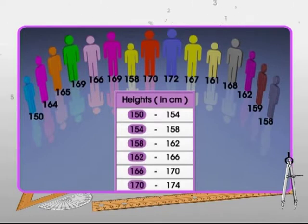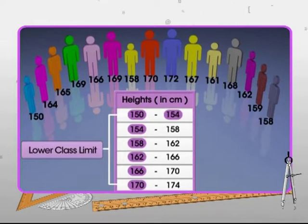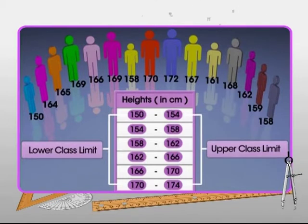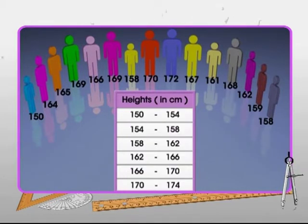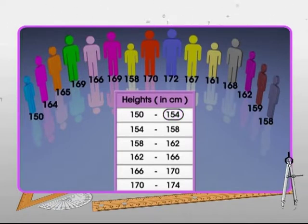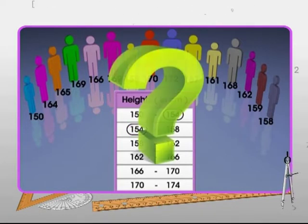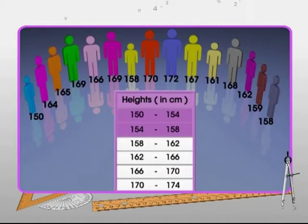The lowest number in each class interval is known as its lower class limit, and the greatest number in each class interval is known as its upper class limit. Now, you might be thinking that 154 is appearing in both the first and the second interval. In which class interval should it be considered?